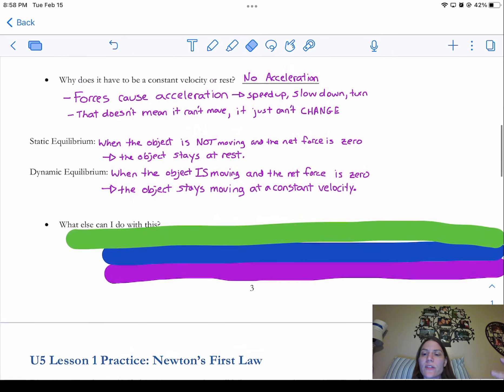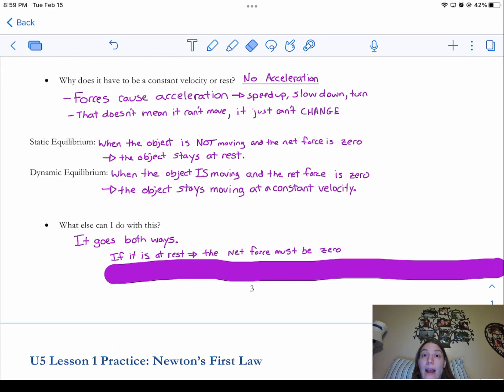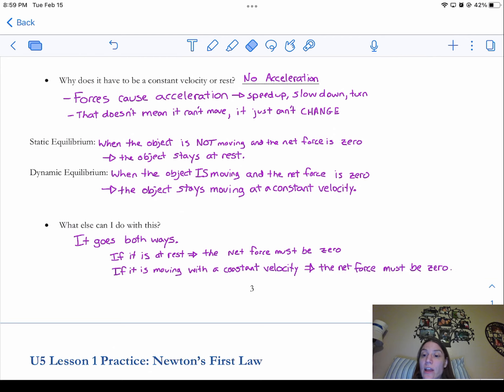So what else can I do with this information? Well, it goes both ways, right? So if you've got an object that is at rest, then you know the net force has to be zero. And if you have an object that is moving with a constant velocity, you also know that the net force must be zero. And you also know that if it's changing, if it's speeding up or slowing down or turning, then the net force has to not be zero, right? Because it goes both ways. It goes both ways and all the other directions too.